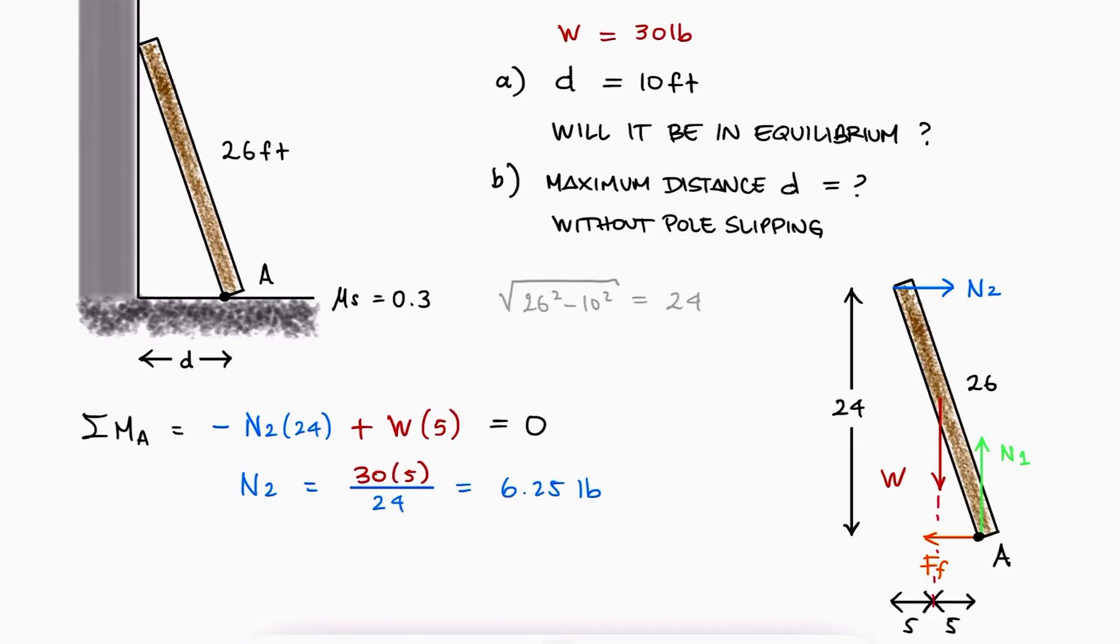What we need to find now is if the friction force can be higher than this value, and to do that, we need the normal force 1. A sum of forces in Y would show us that N1 is 30 pounds and therefore the maximum friction force can be 9 pounds.